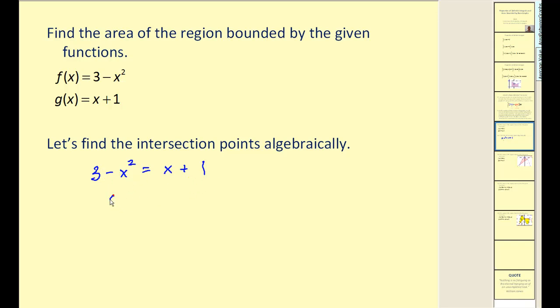Move these two terms to the other side. We'd have positive x squared plus x, and if we subtract three on both sides, we'd have minus two. This does factor. So we have two points of intersection: x equals negative two and x equals one.